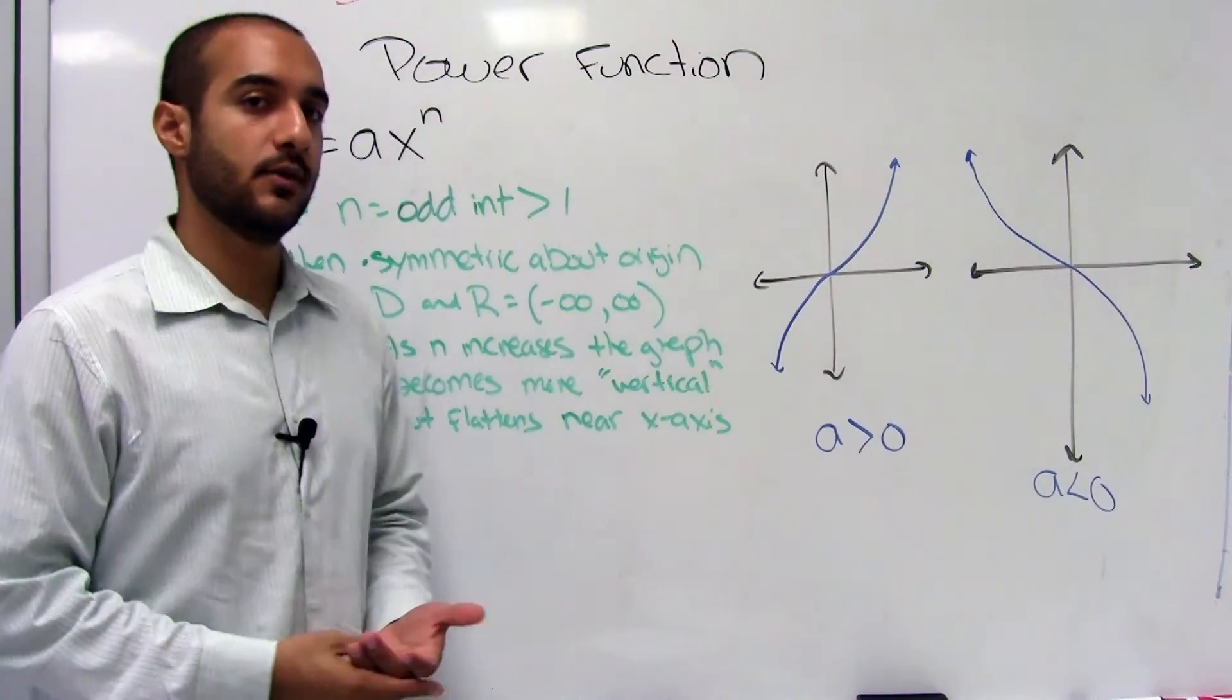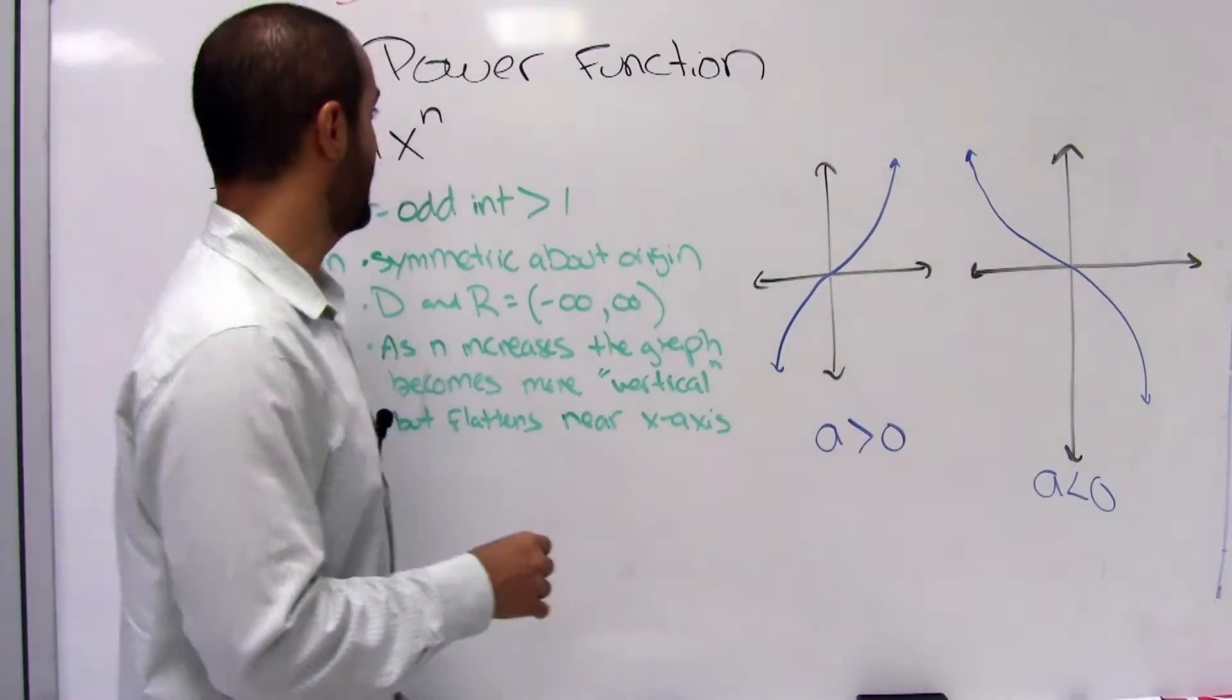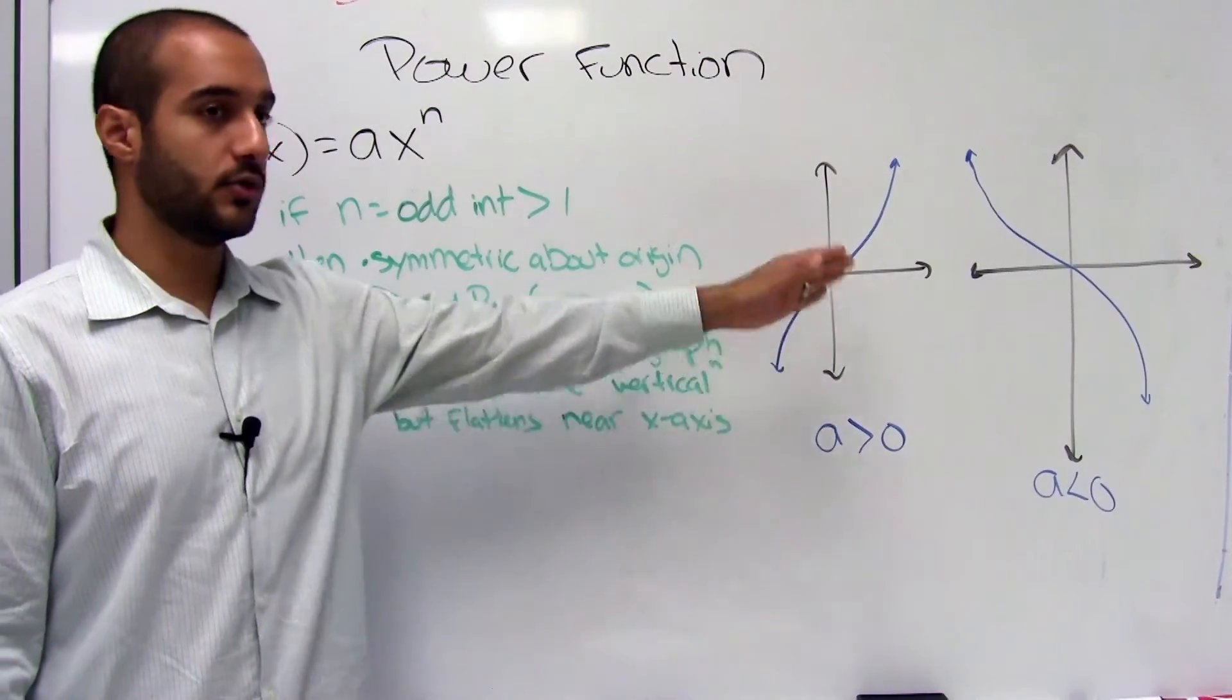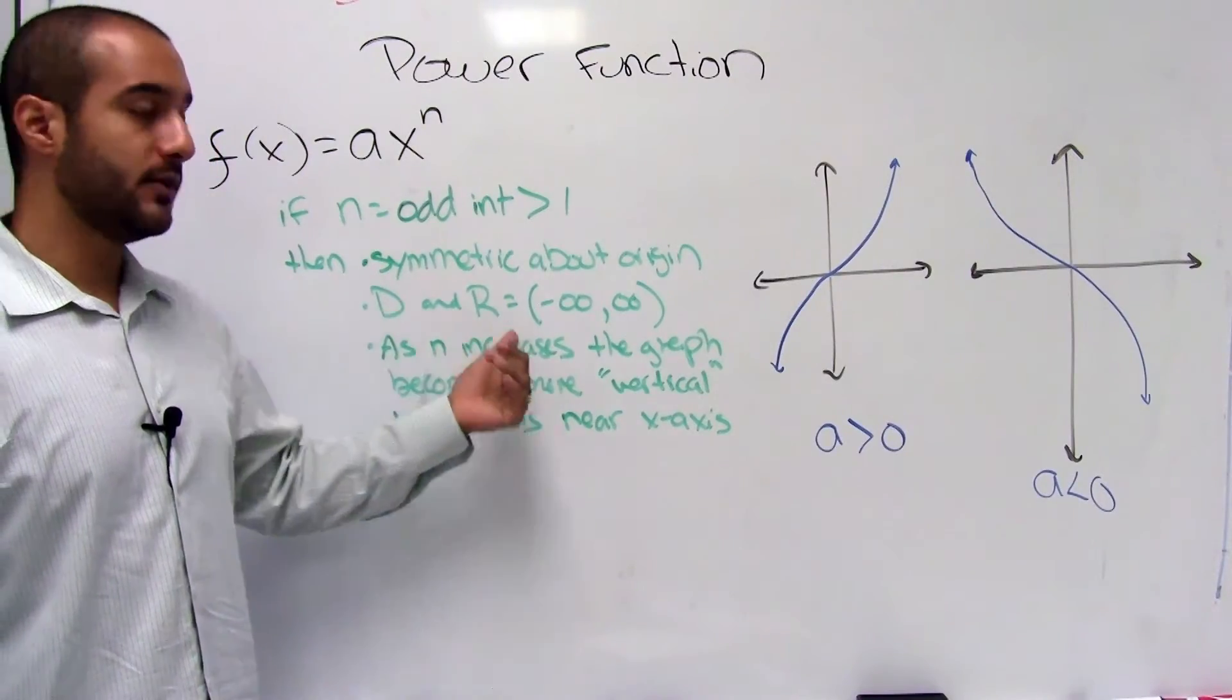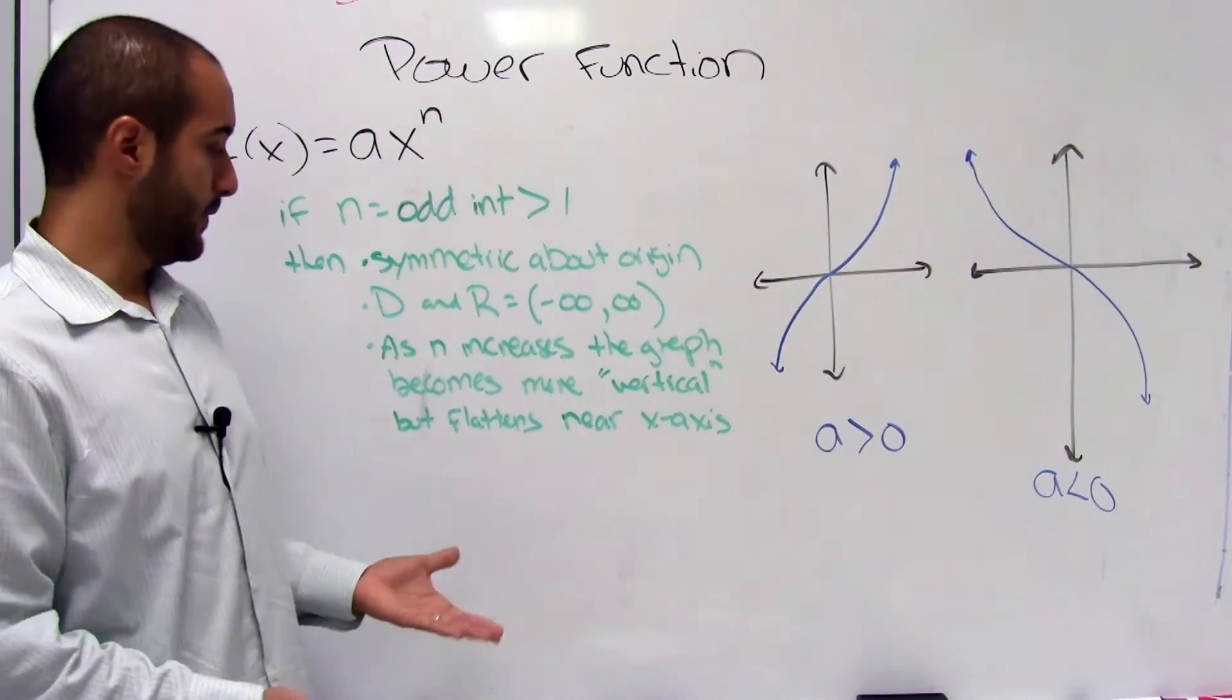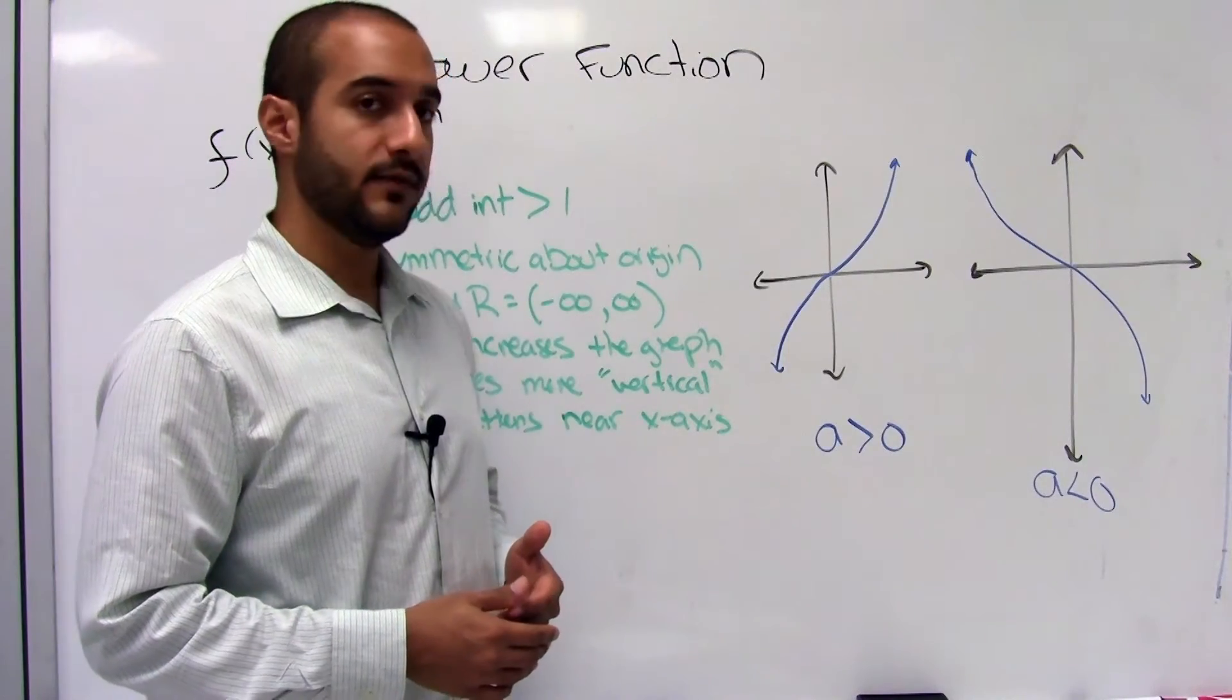Alright, now there's still some numbers that we actually haven't looked at yet, which are the rest of the odd numbers. We know that when it's 1, it's a straight line, but what about when it's 3, 5, 7, 9. Well here, we have that when n is an odd integer that's greater than 1, we'll have a graph that looks like this, which looks like your cubic function, and it's symmetric about the origin. The domain and range is always going to be all real numbers. And as n increases, the more vertical that your graph will become. So it'll start to get steeper, kind of like we saw with the even numbers.